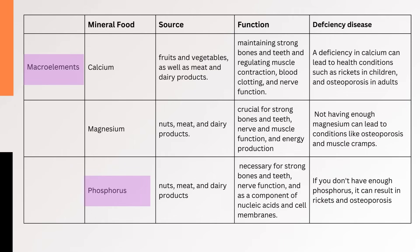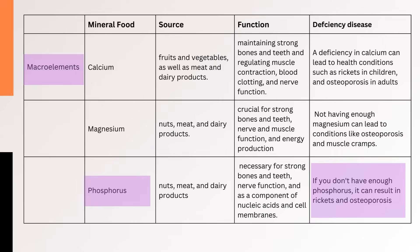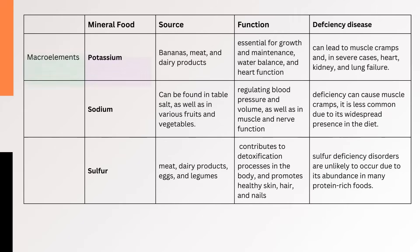3. Phosphorus (P) — Phosphorus is necessary for strong bones and teeth, nerve function, and as a component of nucleic acids and cell membranes. You can get it from nuts, meat, and dairy products. If you don't have enough phosphorus, it can result in rickets and osteoporosis.